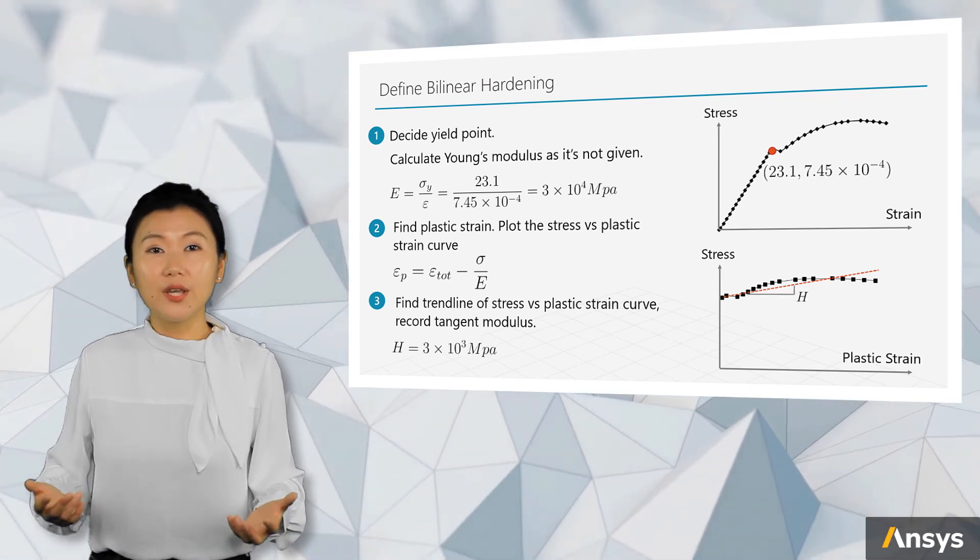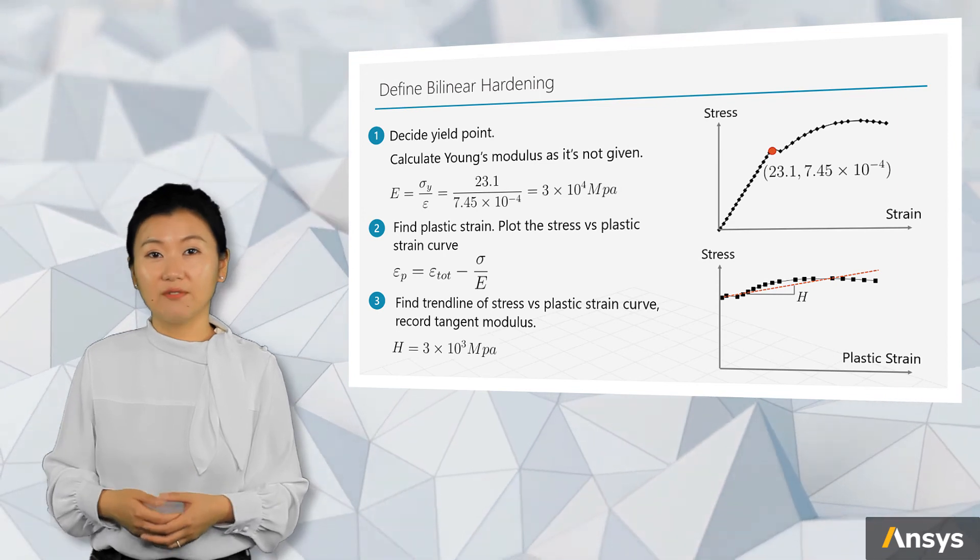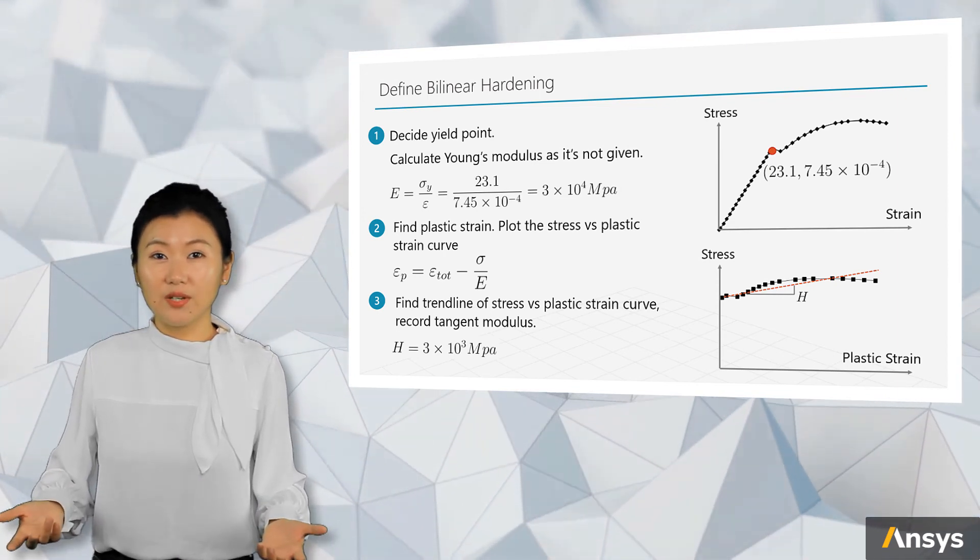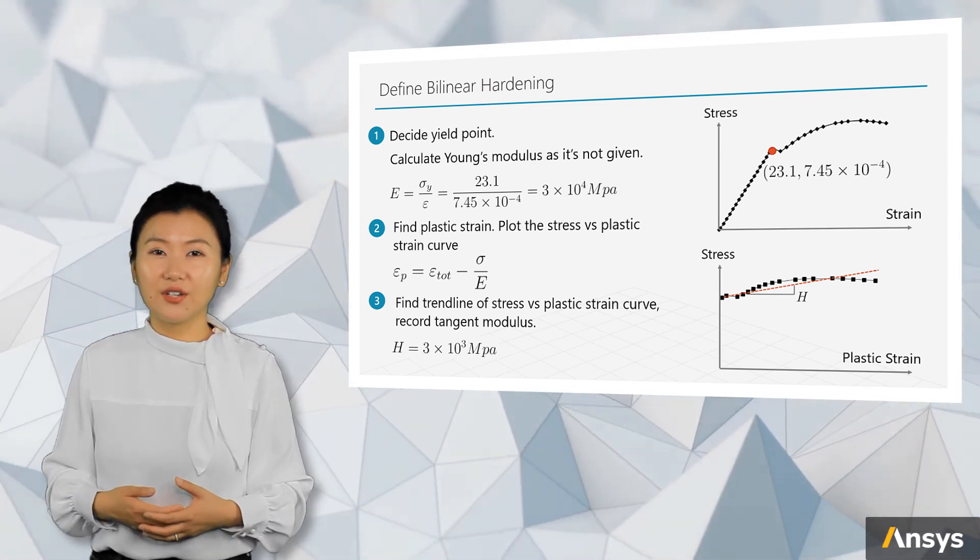In summary, three inputs are needed for the definition of bilinear hardening: Young's modulus, yield point, and hardening modulus.